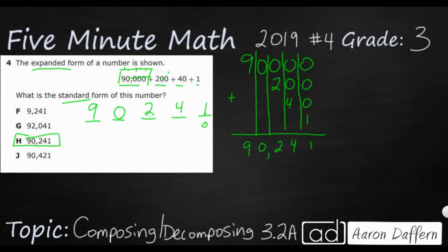And the reason we need to put a comma here is because we are changing periods. Sometimes we'll call them periods. Sometimes we'll call them families. But the 1's family or the 1's period are the first three digits put together. The 1's, 10's, 100's.